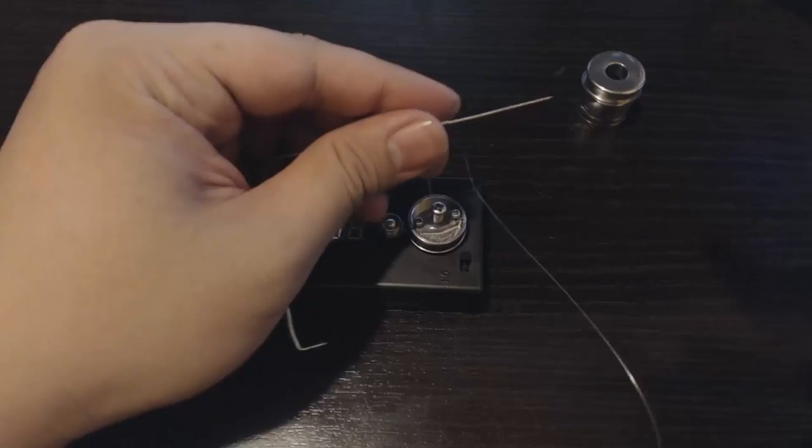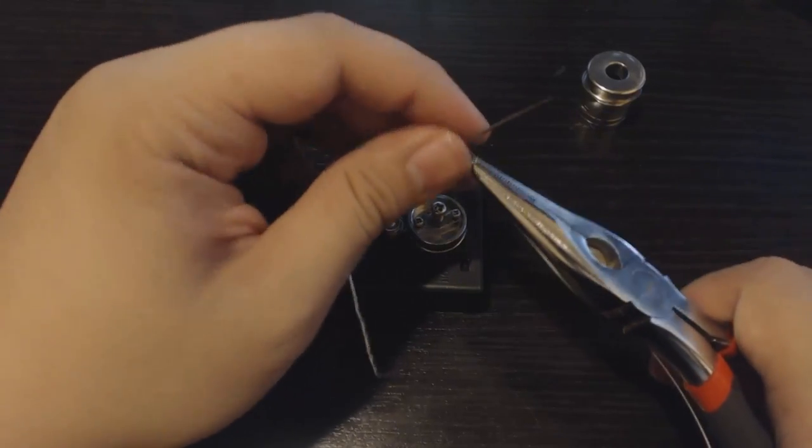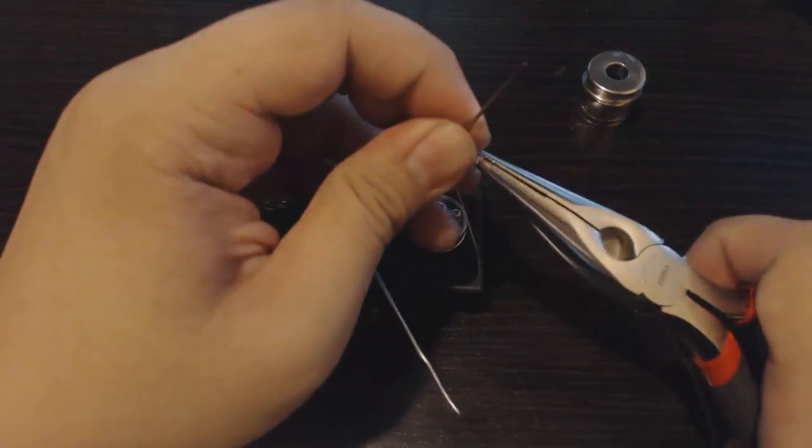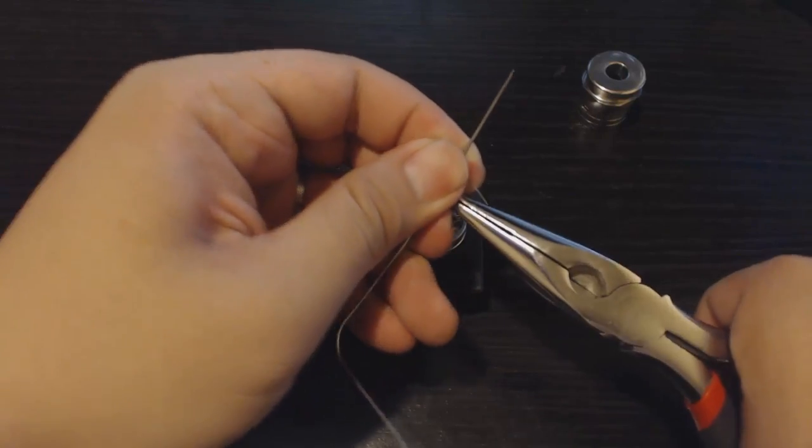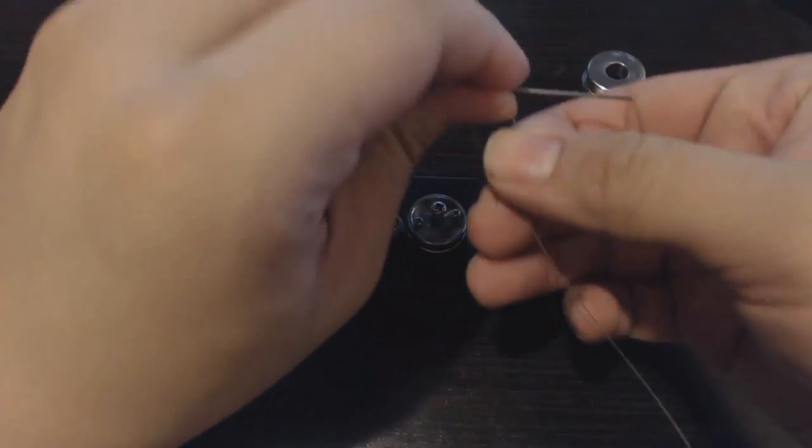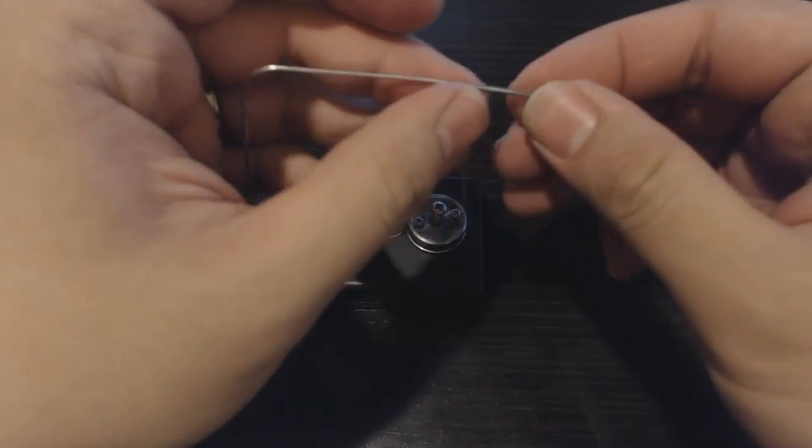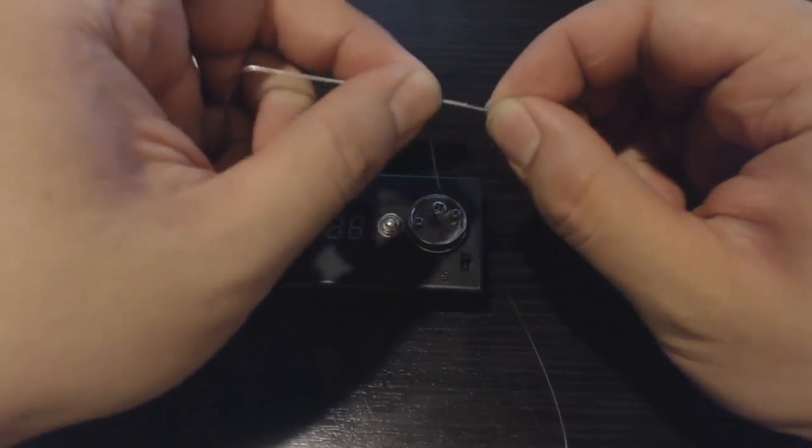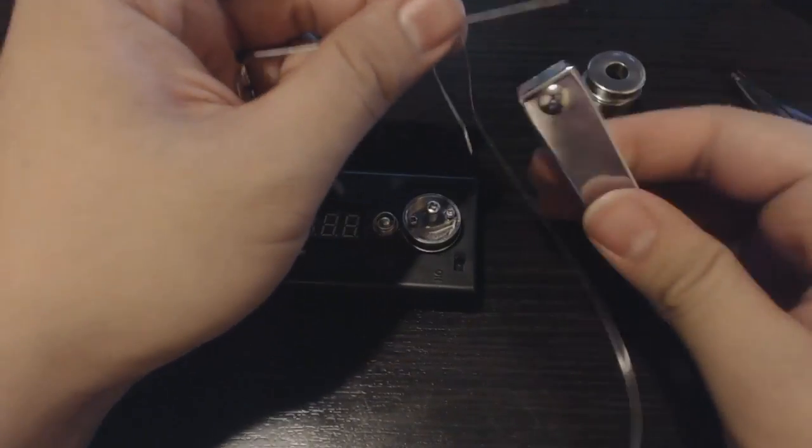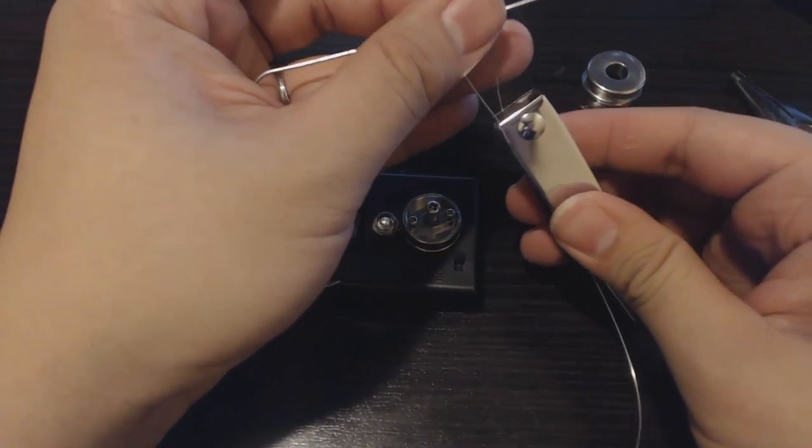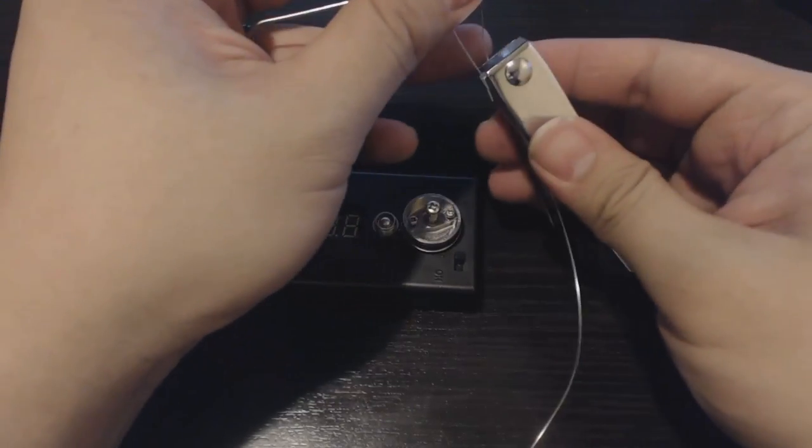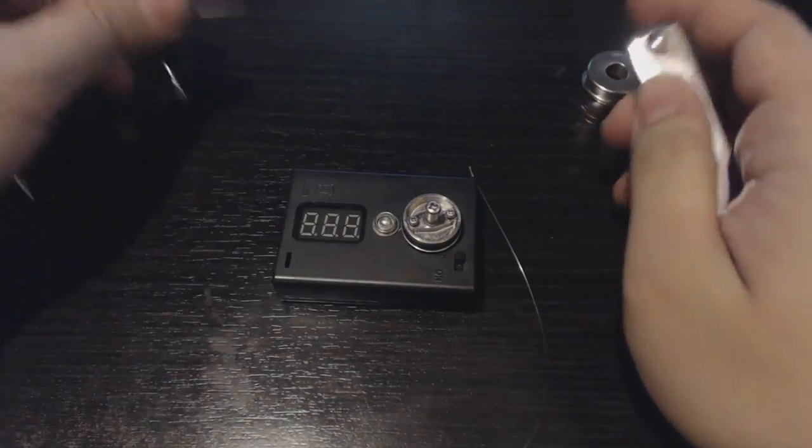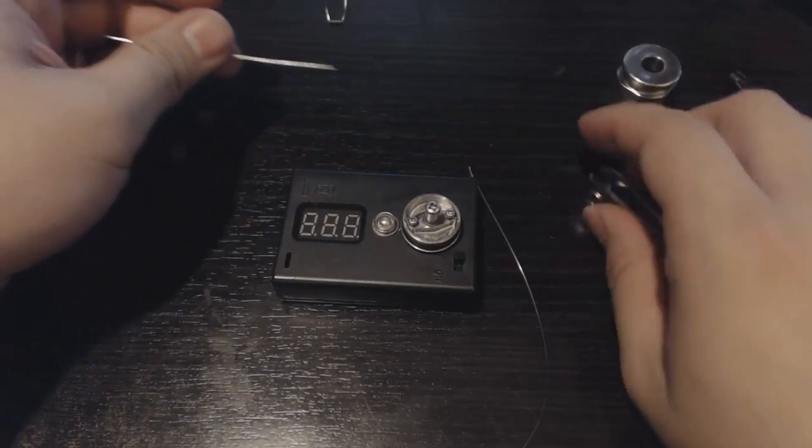And then what I'm going to do is that I'm going to take a plier, and then give it a little tug here, give it a little tug here, so it's nice and snug. All right, there we go, and there's my nano coil. So I'm going to go ahead and nail clipper, clip this off, and then I'm going to set this aside.